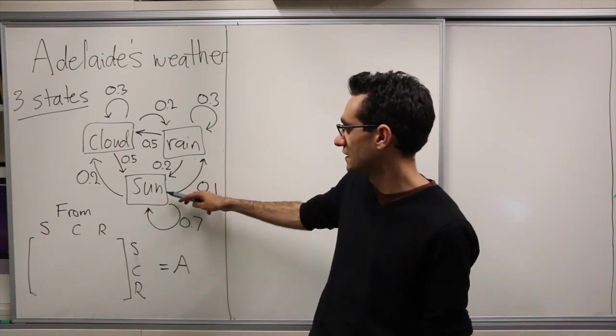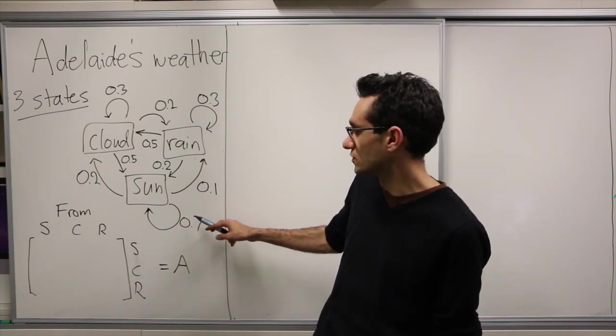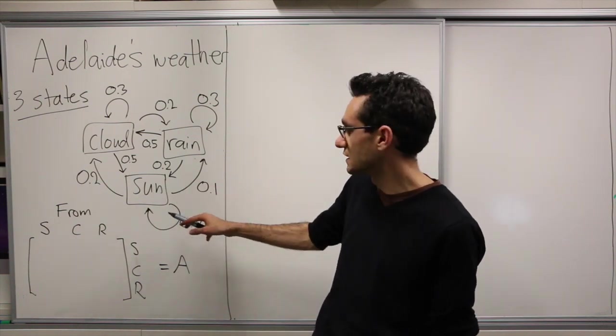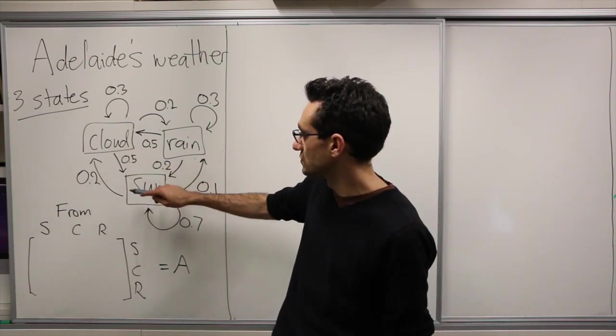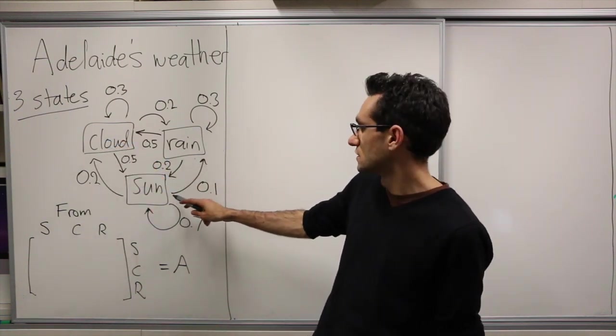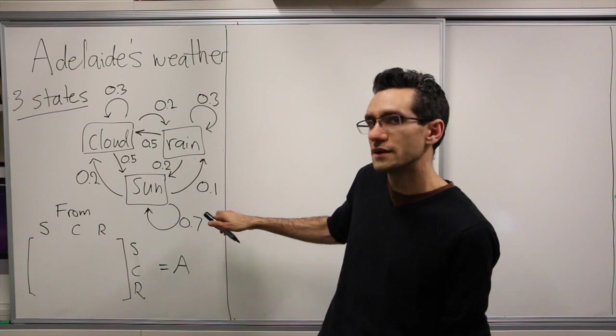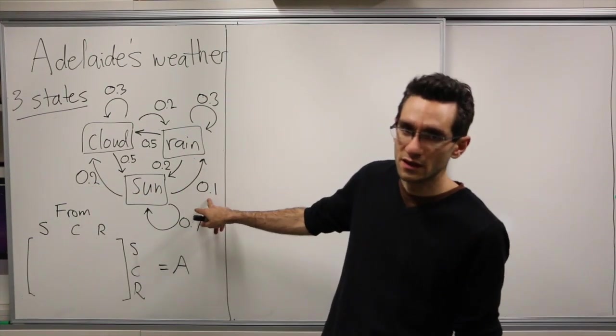For instance, if today is sunny then we have a 0.7 chance of it being sunny tomorrow, so we move from the state sunny to sunny. We've got a 0.2 chance of it being cloudy tomorrow, so moving from the sunny state to the cloudy state, and we've got a 0.1 chance for it to be raining tomorrow. And these sum up to 1: 0.7 plus 0.2 plus 0.1 is 1.